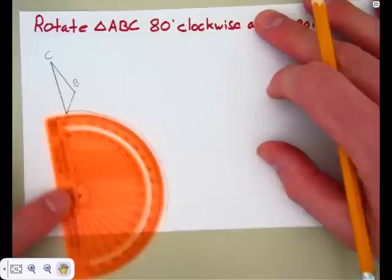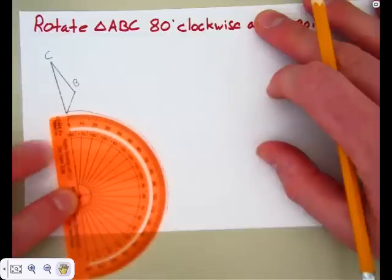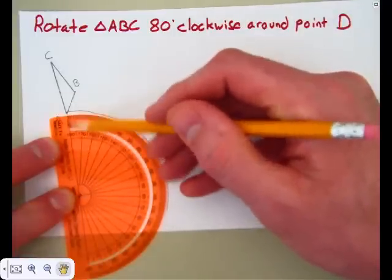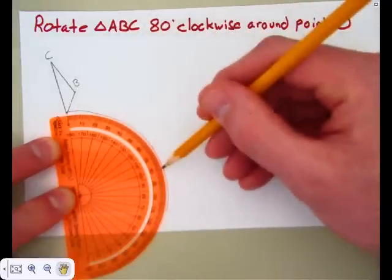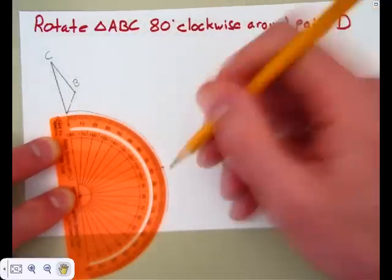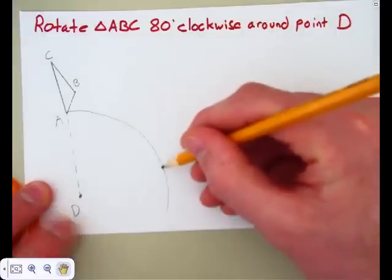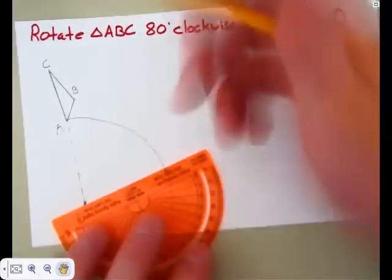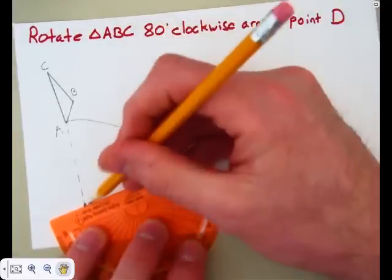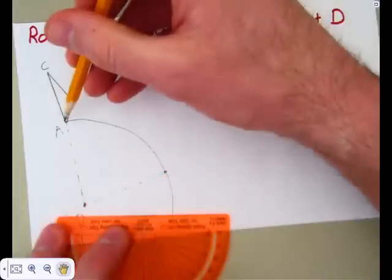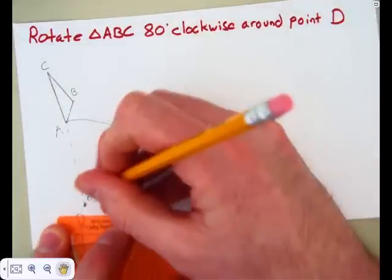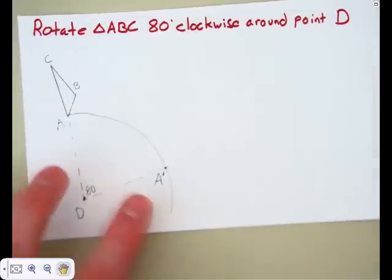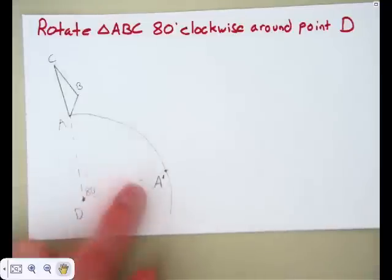Now, you don't have to do this every time, but it helps show the idea of 80 degrees. I'm just going to very lightly draw in a segment connecting the point I'm rotating and the point that we're rotating around. Then I'm going to set my protractor to that line. The vertex is at point D. The zero degree mark is lined up right there with A, and I'm just going to go around 80 degrees. And it just happened to be that's where point A is going to be, or point A prime.